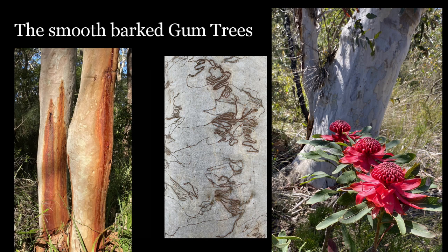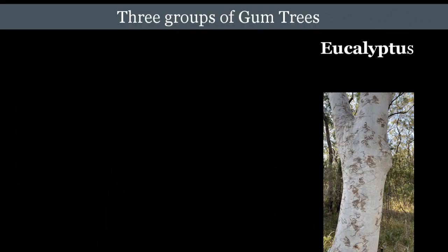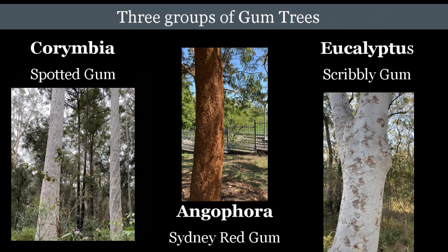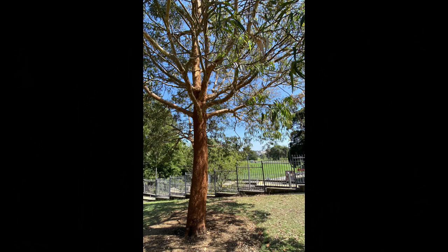In our last clip we started to explore the gum tree group and how there are three main groups of gum trees: the eucalypts such as the scribbly gum, the angophoras like the Sydney red gum, and the corymbias, an example of which is the spotted gum. In this clip we're going to explore some of the characteristic features of each of these gum tree groups, so let's go for a bit of a walk.